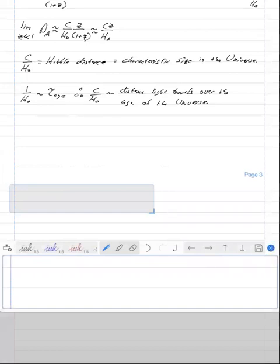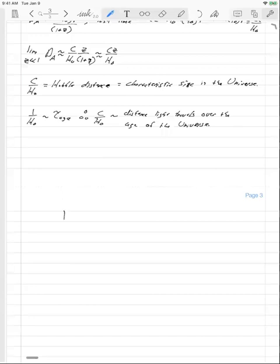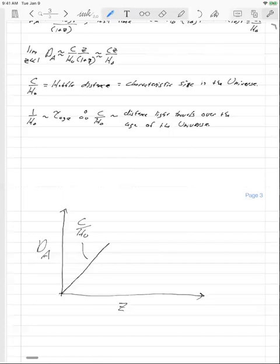So let's just plot this. The angular diameter distance as a function of Z. For low Z, it's roughly a straight line where the slope is C over H naught. Now later on in homework, you are going to derive what is this angular diameter distance for various cosmologies. And in general, for most reasonable cosmologies, you will find that this D A starts to turn down.